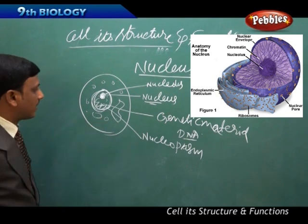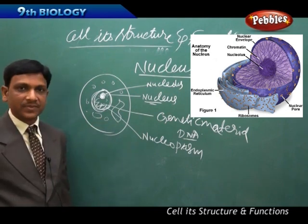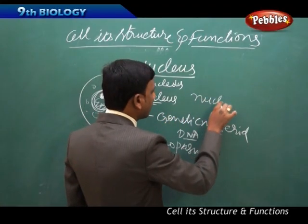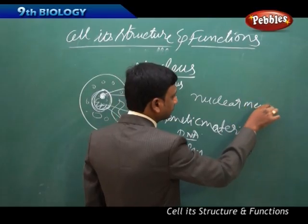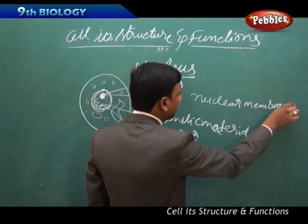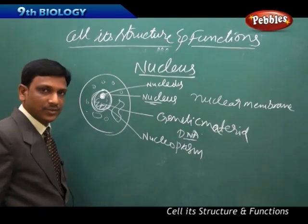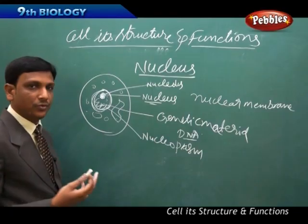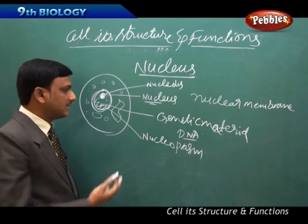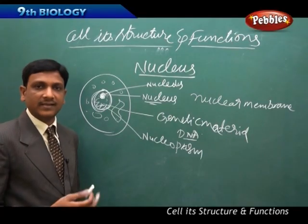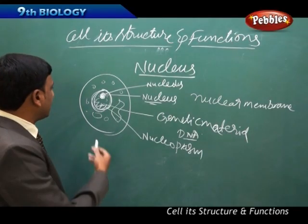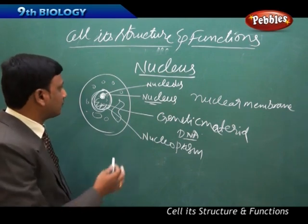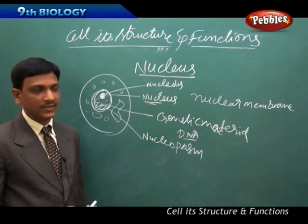So these are the different parts of a nucleus. The nucleus is surrounded by a nuclear membrane. Inside the nucleus there is fluid-filled material called nucleoplasm, and in the nucleoplasm there is the genetic material, the DNA. It also has one more dark body called the nucleolus. Now let us come back to the functions of the nucleus.